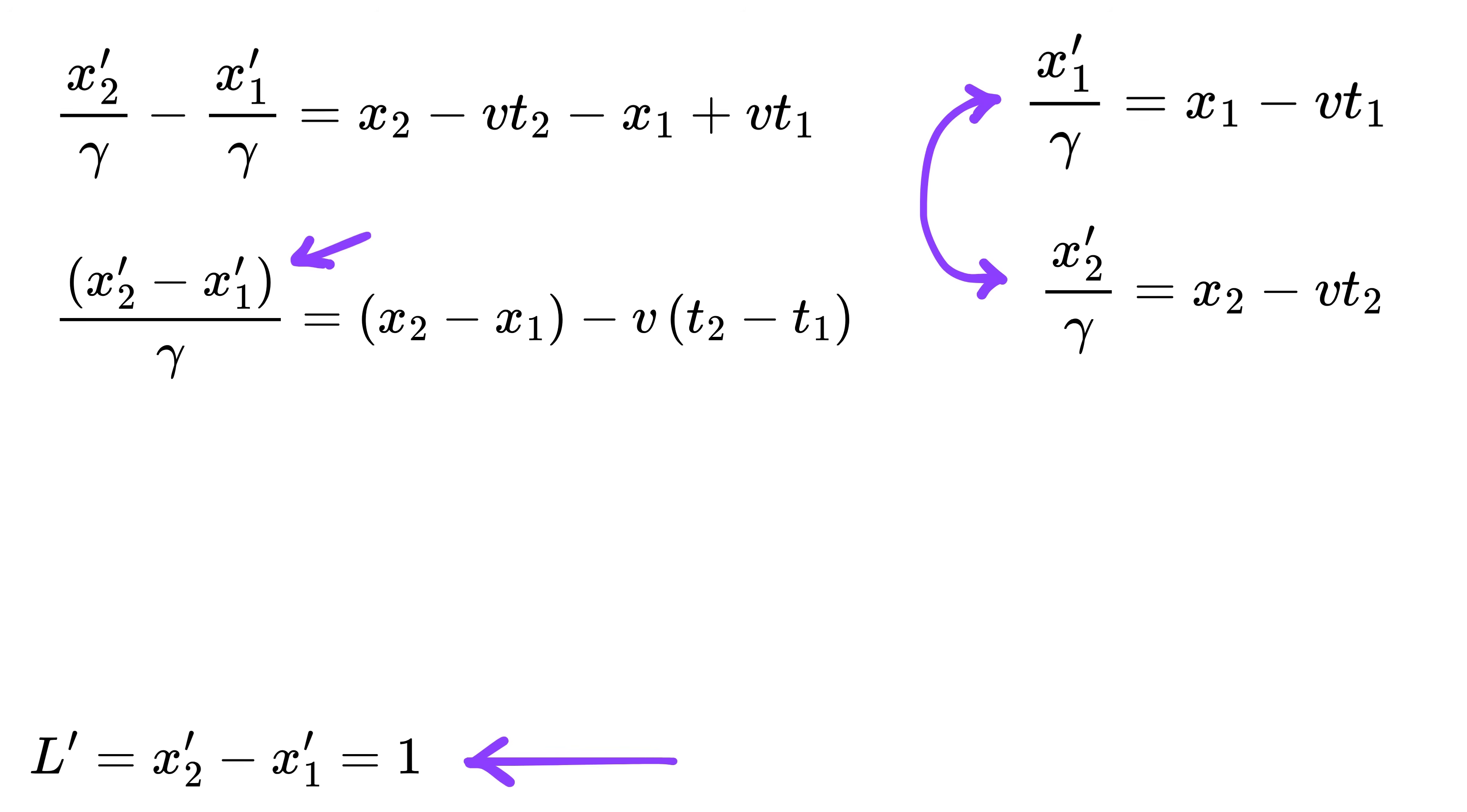Now this will become (x2 prime minus x1 prime) over gamma equals (x2 minus x1) minus v times (t2 minus t1). Now this is one meter and thus it will be one over gamma equals this, which will be the same as the length of the pole measured by Alice, and thus it will be say L. Now here's the main thing: this will be minus delta t, which denotes the difference in time of measurement between the two ends of the pole in Alice's frame.